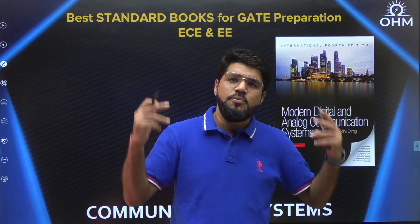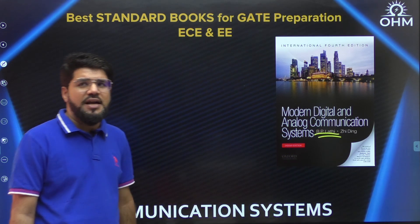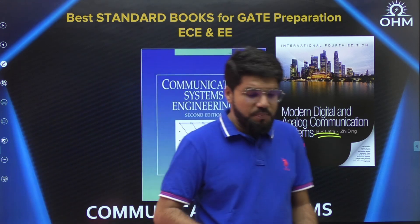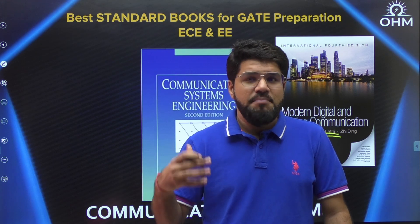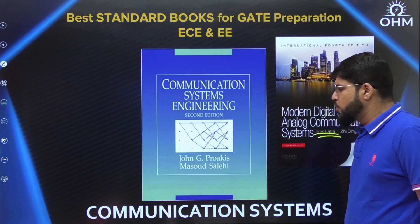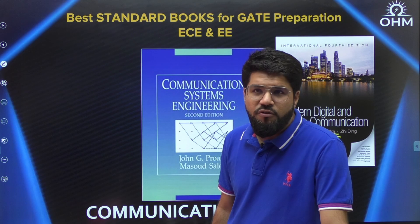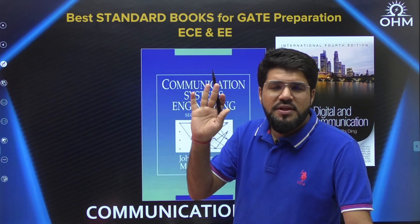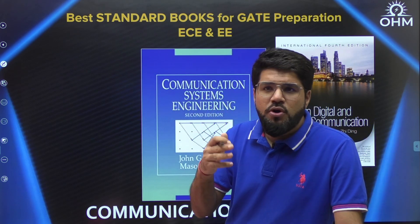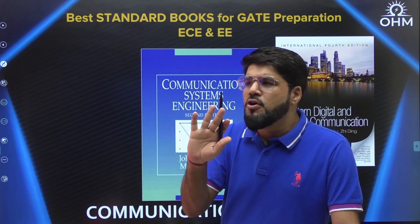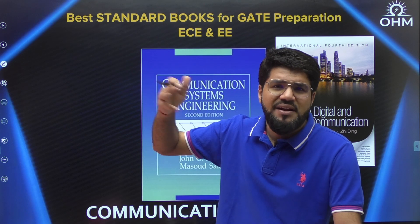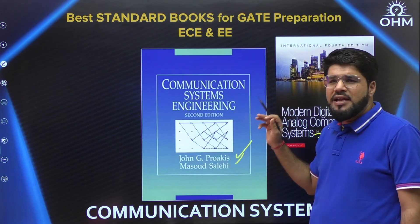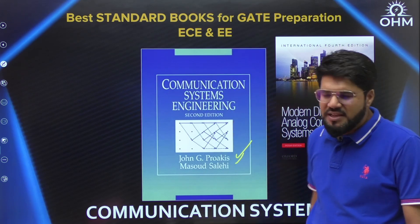But if you want to see correlation with previous year GATE questions, the book that matches your preparation in line with those questions is Communication Systems by Proakis. If you're good in basic maths and basic signals — especially Fourier series and Fourier transform for analog communication, and probability, random variables, and random processes for digital communication — then definitely I will say Proakis. The problem level here will be fantastic, matching with the GATE PYQ level. Future questions may be motivated from the content of this particular book.